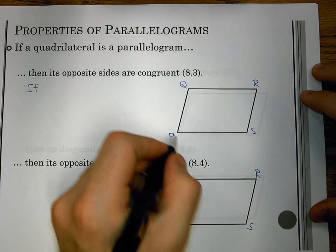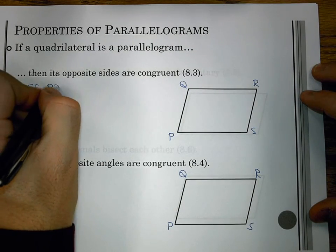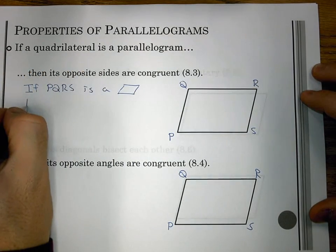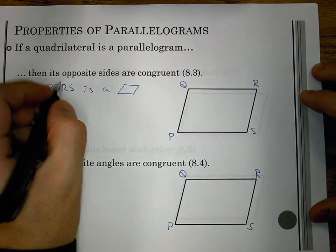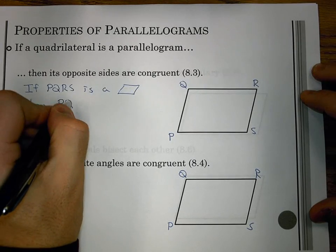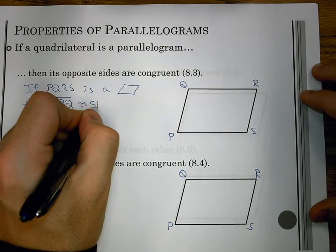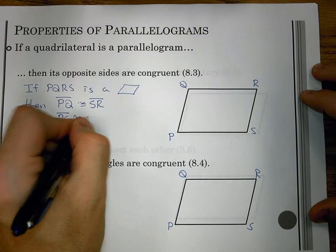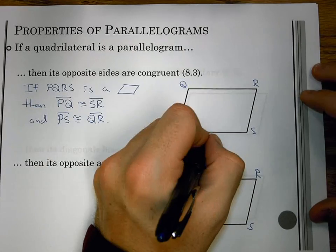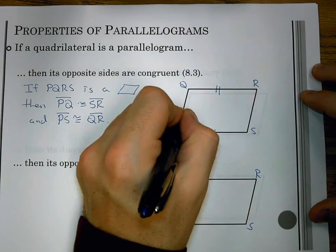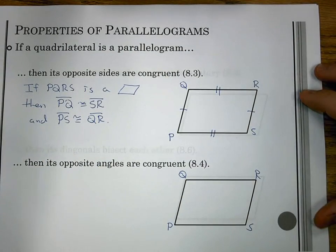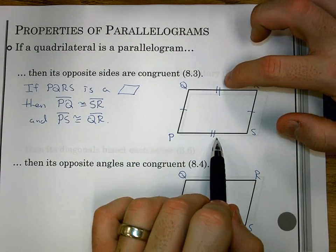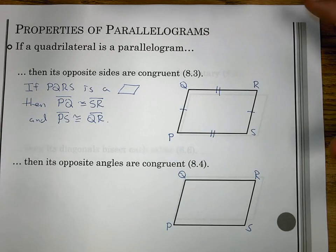So let's rephrase that. If PQRS is a parallelogram, then opposite sides PQ is congruent to SR and PS is congruent to QR. So opposite sides are the same. If I knew values, I could set these equal. And that's really how we'd use that property.